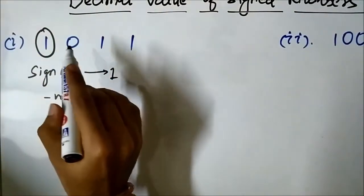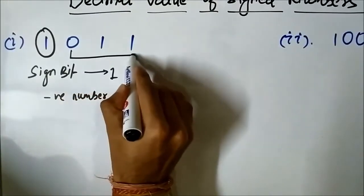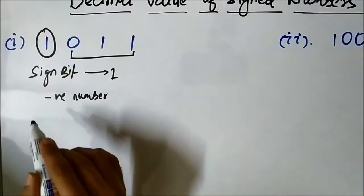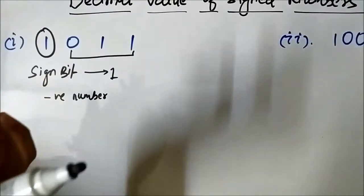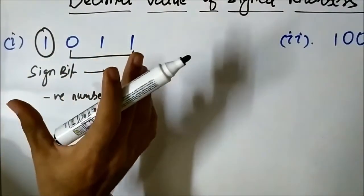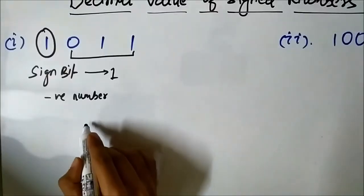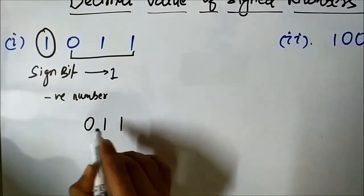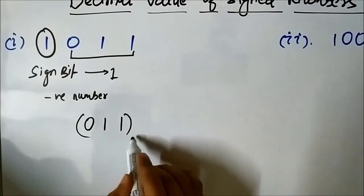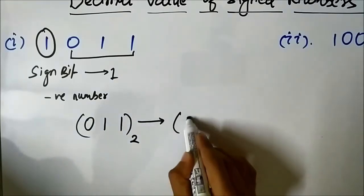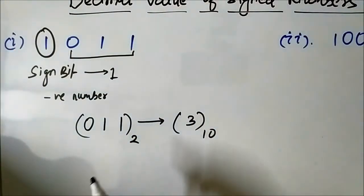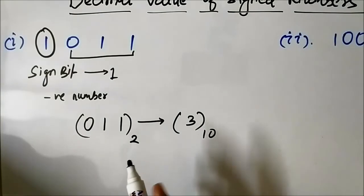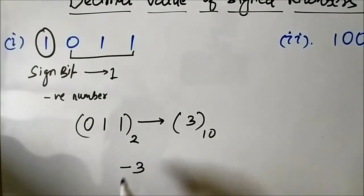The remaining 3 bits are the magnitude bits, which determine the magnitude of the number. The sign bit represents the sign of the number, and the remaining bits represent the magnitude. So 0, 1, 1 — in binary — has a decimal value of 3. So the given number 1011, represented using sign magnitude system, is actually minus 3.